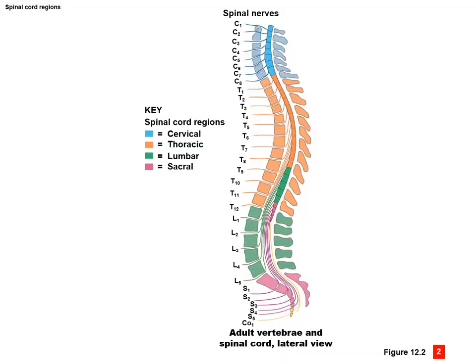Here is a diagram showing the spinal cord regions. Remember, there are eight cervical, 12 thoracic, five lumbar, and five sacral, with one coccygeal at the very end. You can see where the spinal cord actually ends between L1 and L2, but nerves keep extending out beyond that, going all the way down towards the sacral and coccygeal region of the vertebral column.